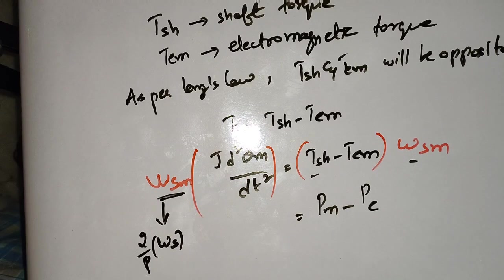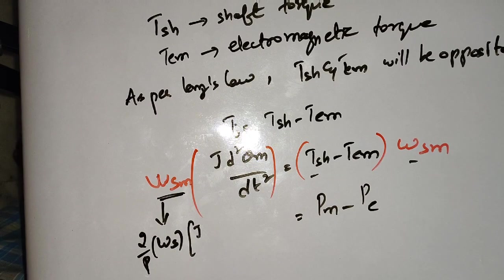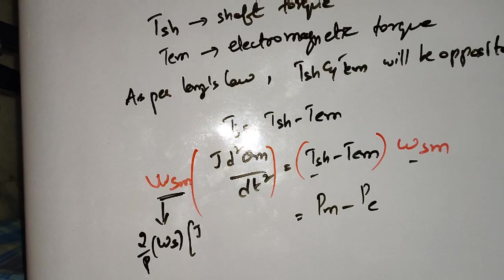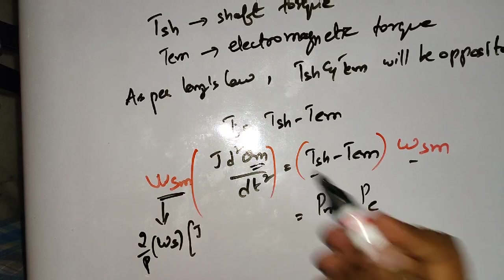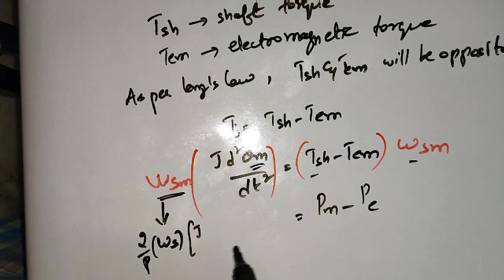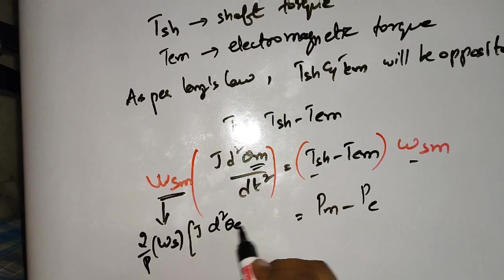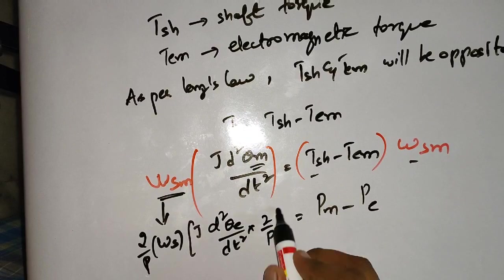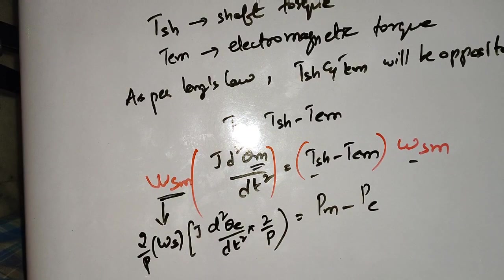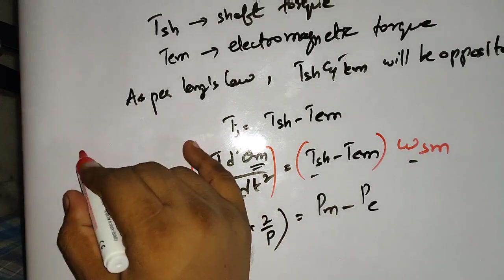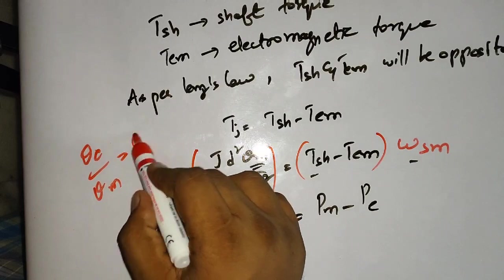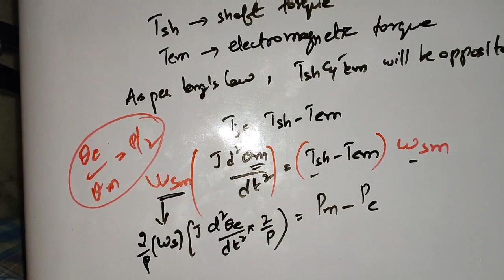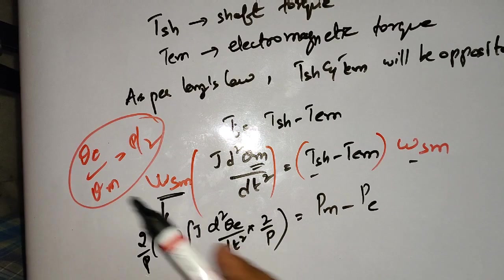We know the relation between electrical and mechanical angles: θ_electrical / θ_mechanical = P/2, so θ_mechanical = (2/P) · θ_electrical. Please remember this relation. Using this, the mechanical degrees are now converted to electrical degrees, giving d²θ_E/dt² · (2/P). So I must convert theta to electrical representation using that concept.